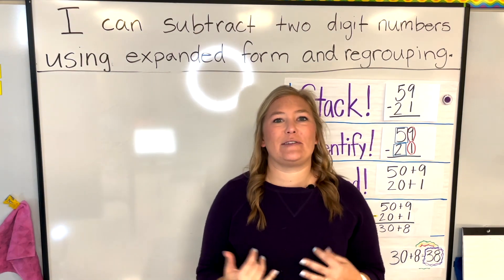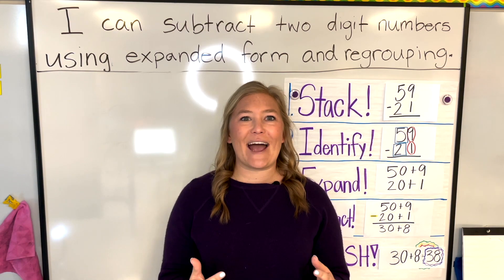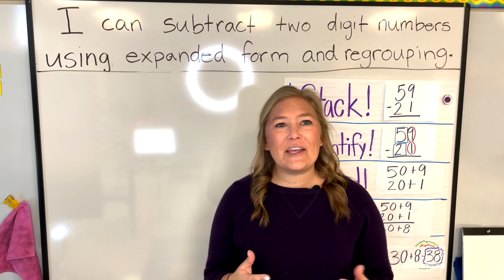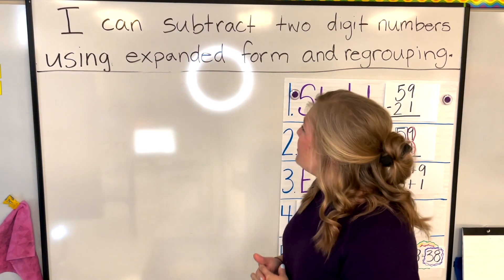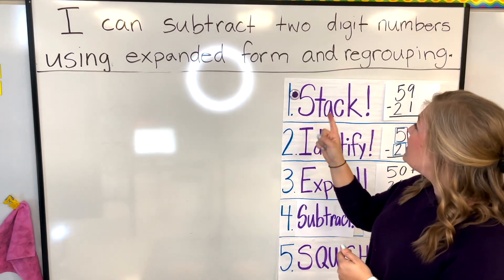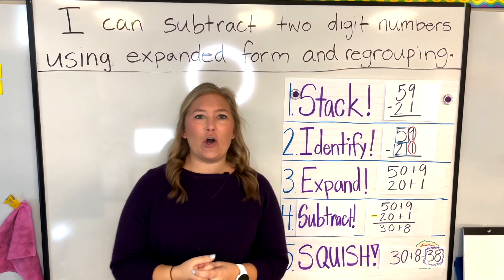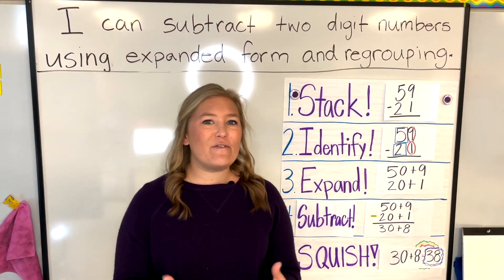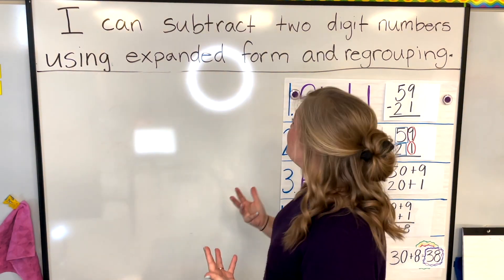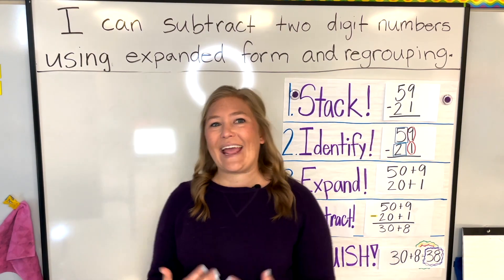Today we're going to be talking about subtracting two two-digit numbers within 100. We're also going to be adding an extra step today. Let's go over our I can statement: I can subtract two-digit numbers using expanded form and regrouping. This sounds very familiar — last week our I can statement just said I can subtract two-digit numbers using expanded form. Now we're adding 'and regrouping.'